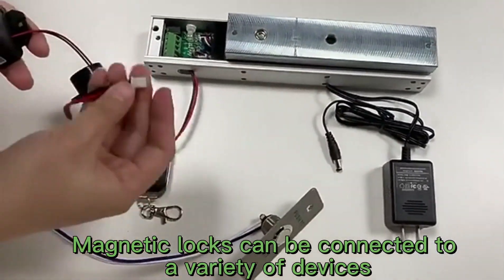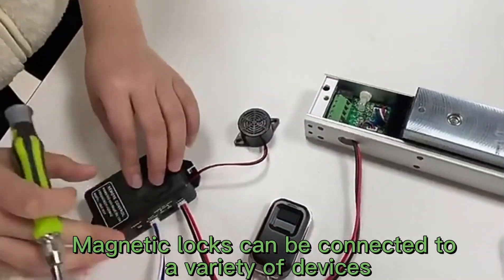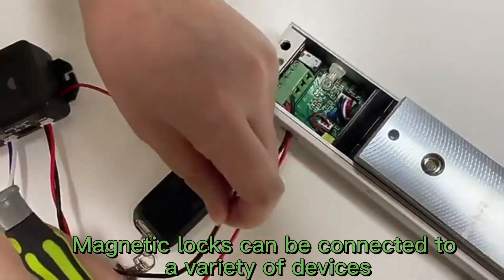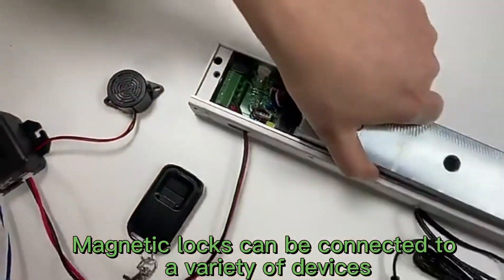Secondly, connect the magnetic lock to the receiver. Grab the red and black JST 2-pin cable. Connect the red wire to the positive terminal of the magnetic lock, and then connect the black wire to the negative terminal. The magnetic lock is a fail-safe lock. We set it to NC.